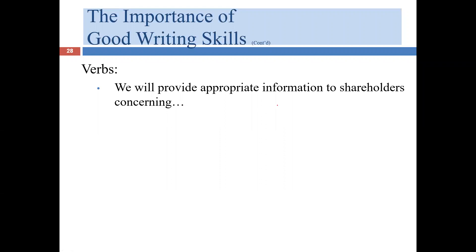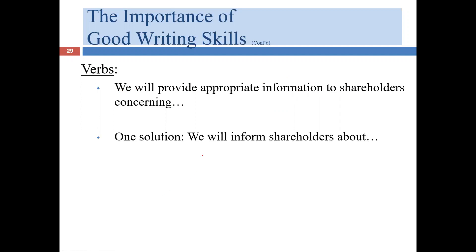'We will provide appropriate information to shareholders concerning.' We can immediately recognize 'information' as a nominalization because it ends in I-O-N. The root is a perfectly good verb. We can rewrite this sentence: 'We will inform shareholders about.' We went from eight words to five words, and we've reduced the length significantly. It's a much more engaging and vigorous sentence. Information is an everyday word, so using it doesn't cause a plain English problem per se — it just saps the energy from the sentence.